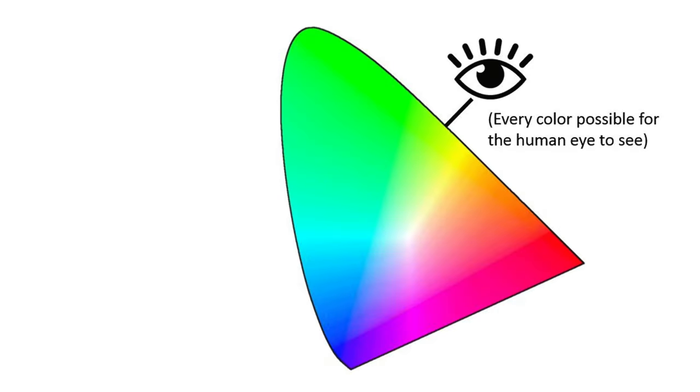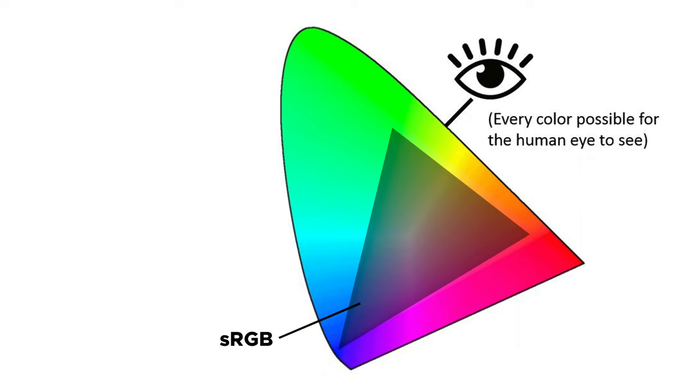Understanding the color range is very crucial, and if I talk about it in simple words, it is defined as the range of colors which a device can produce or record. If you look at the diagram, you can see the whole spectrum of colors. In daily life, while using monitors, TVs, and mobile screens, we are looking at sRGB color space, which covers a very small chunk of the whole spectrum of colors.